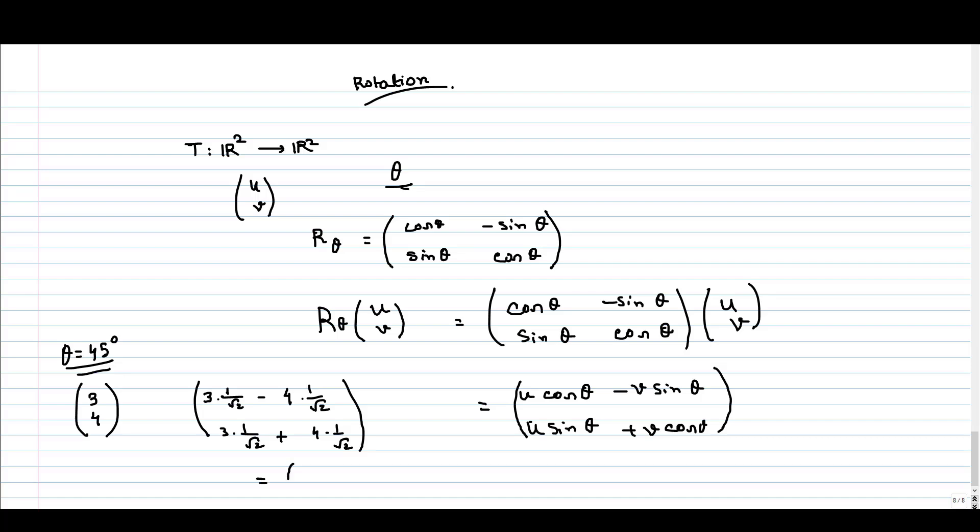What we get: we get -1/√2, and the second coordinate will be 7/√2. This will be the vector after rotating (3,4) by 45 degrees.